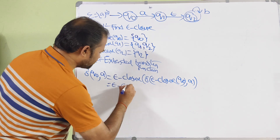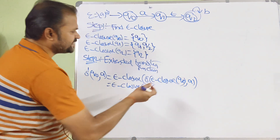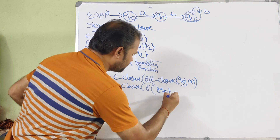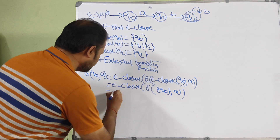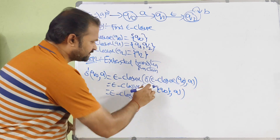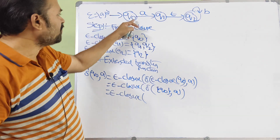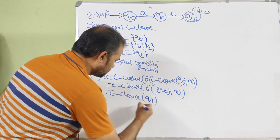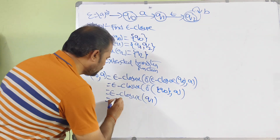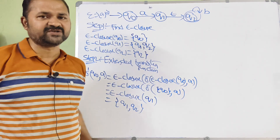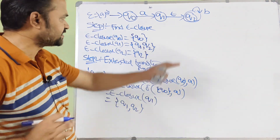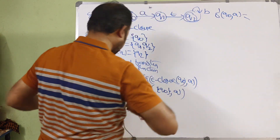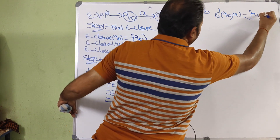Continuing δ̄(Q0, A): δ(Q0, A) = Q1, so we get ε-closure(Q1). Since ε-closure(Q1) = {Q1, Q2}, therefore δ̄(Q0, A) = {Q1, Q2}.